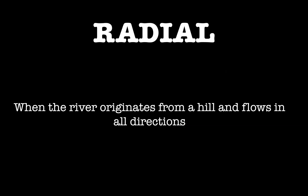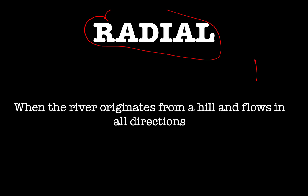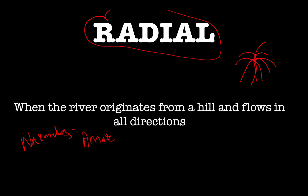Now, the radial pattern — the word radial means a system of river flow that arises from a hill and flows in all possible directions. This is the radial pattern. A classic example is the river Narmada flowing from the Amarkantak Plateau. Tell me in the comment section: which biosphere reserve does the Amarkantak Plateau fall in, and is it above or below the equator?